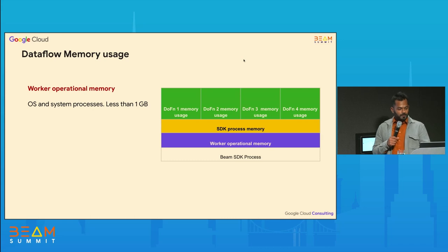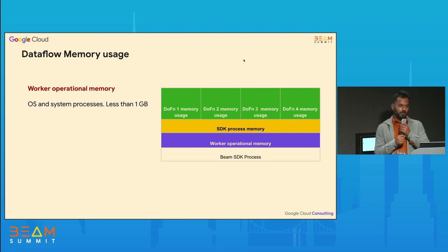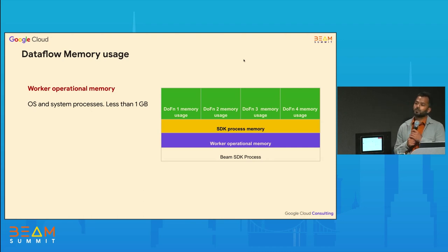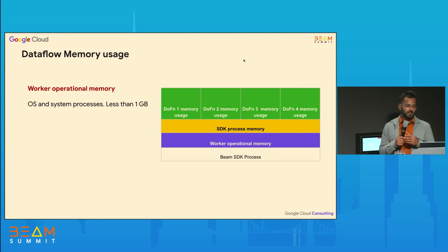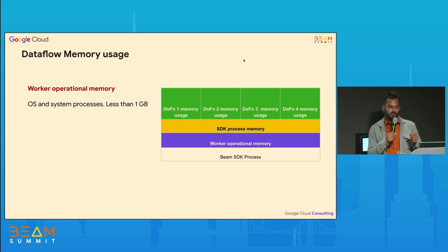The first category of memory usage is what we call worker operational memory. This is a fairly small amount of memory, less than 1 GB, that is used by the operating system and some system processes. There isn't much that users or developers can do in the pipeline to control this.